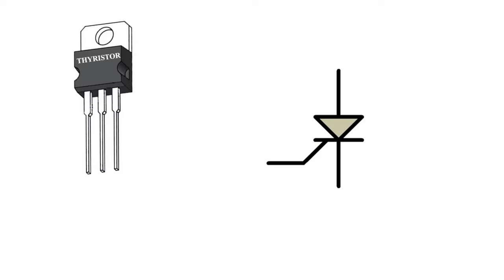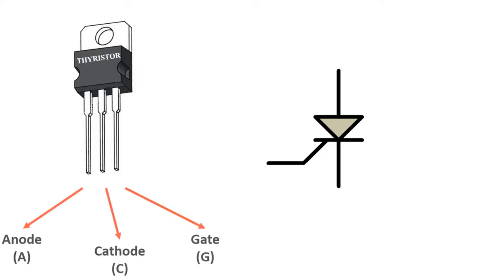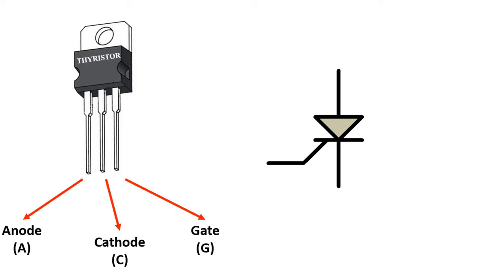Thyristors are generally used for fast switching duty in DC power electronic circuits. They are similar to transistors and also have three pins. The pin names are anode, cathode, and gate.